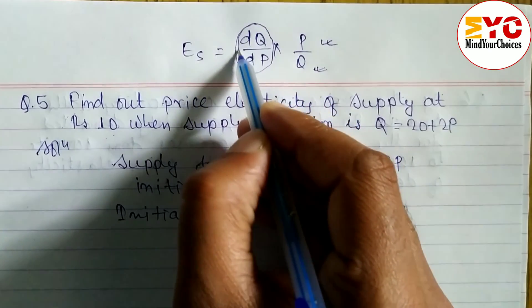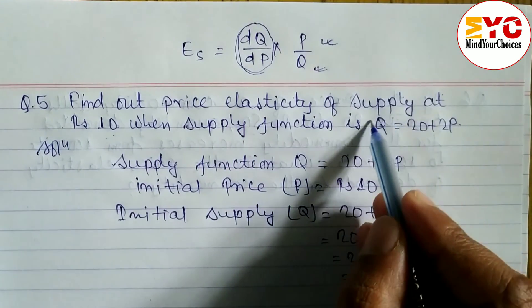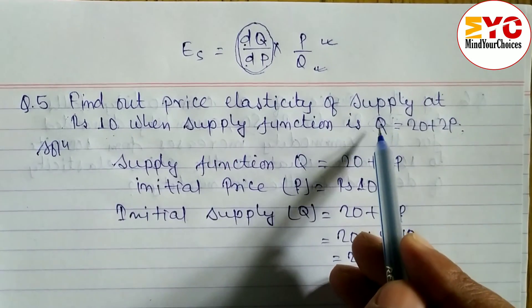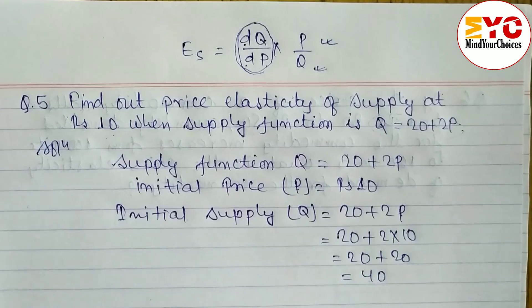We don't have the value of dQ/dP, so when you differentiate both sides by P, we get dQ/dP because we have the supply function Q = 20 + 2P.